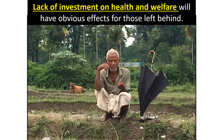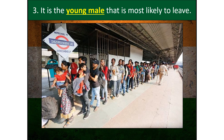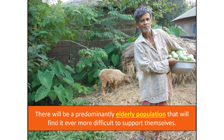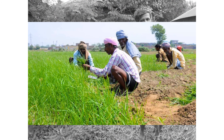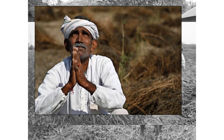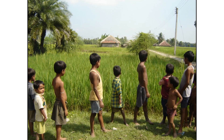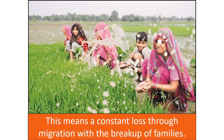Just like Ravenstein said, it's the young male who is most likely to leave — which means those left behind are predominantly elderly and will find it ever more difficult to support themselves. While migration may ease some population pressures, the high birth rates in rural areas mean the situation is deteriorating, resulting in a constant loss through migration and the breakup of families.